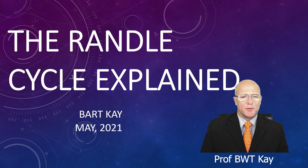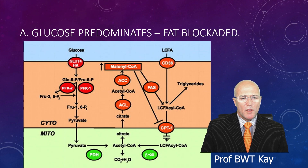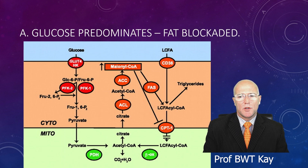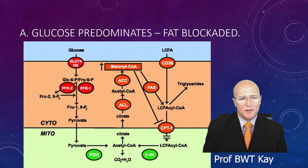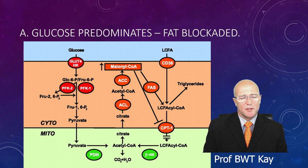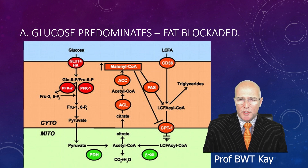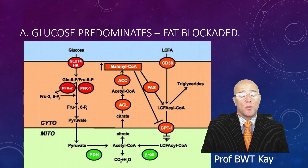The cycle was proposed, put forward, and confirmed as in existence by Randall way back when. Basically, the Randall cycle — for a too-long-didn't-watch version — the quick answer is this: if you have a lot of glucose and also a lot of fat in your bloodstream, all trying to get into your cells, then the fat will inhibit the ability of the cell to metabolize sugar, and the sugar will inhibit the cell's ability to metabolize fat. In other words, they will cross-blockade one another.